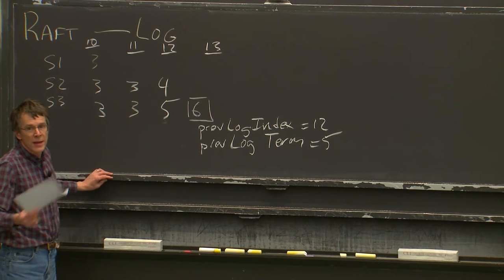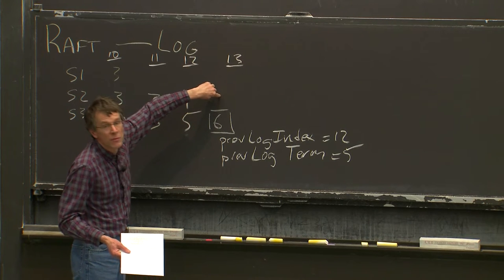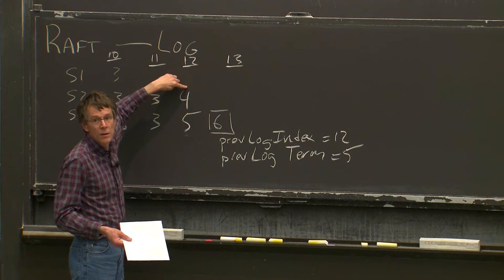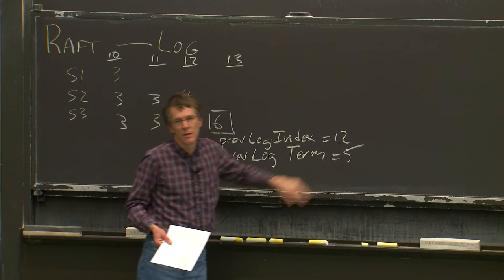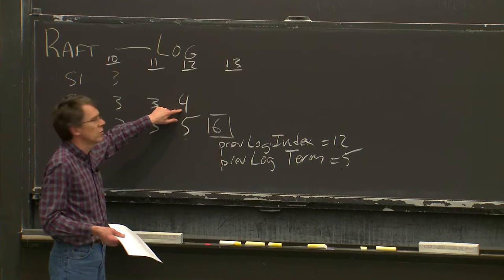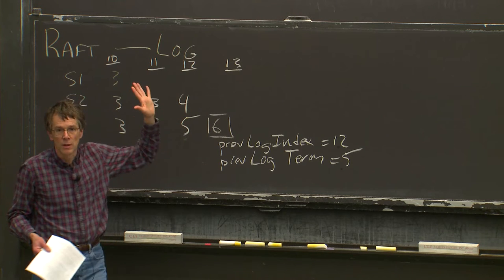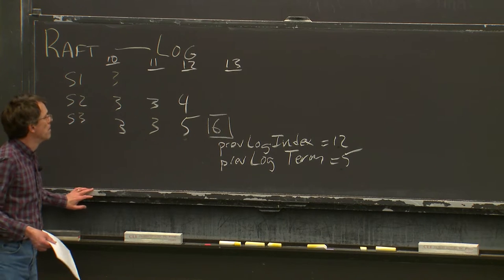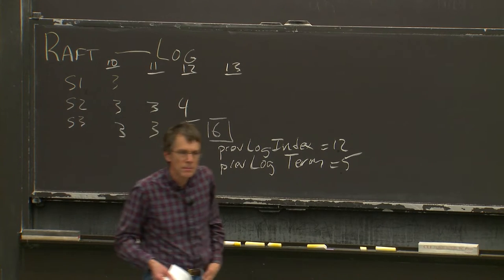The followers, before they accept AppendEntries, are supposed to check that their previous log entry matches the previous information the leader sent out. For server 2, it doesn't match — server 2 has an entry there but it's from term 4, not term 5. So server 2 is going to reject this AppendEntries and send a false reply back to the leader. Server 1 doesn't even have anything at slot 12, so server 1 also rejects the AppendEntries.